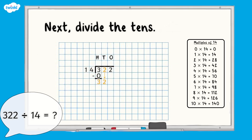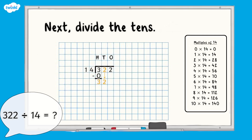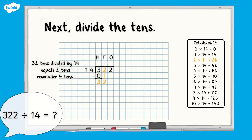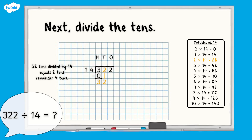Next, divide the tens. If we look at our multiples of 14, we can see that 32 tens divided by 14 equals two tens, because two lots of 14 equals 28, and we have a remainder of four tens. We write the two in the tens column of the answer above the line. When we subtract the 28 tens we have shared equally from the 32 tens we started with, we have four tens remaining.